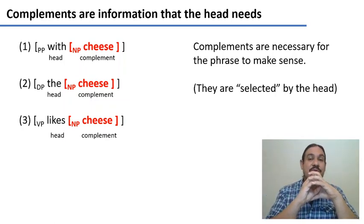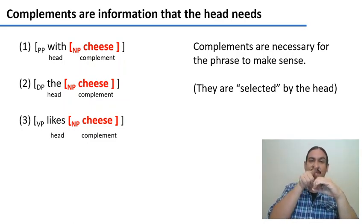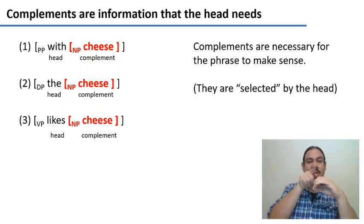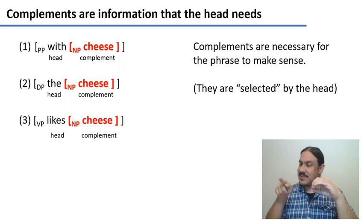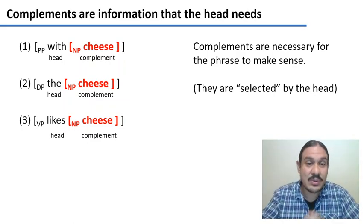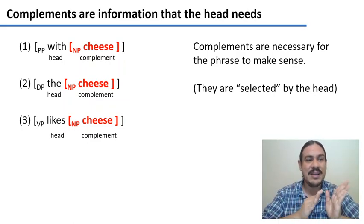In the case of transitive verbs like 'likes,' they are specified to have a complement — some direct object, which is the thing that someone likes. So we have heads, complements, and phrases.